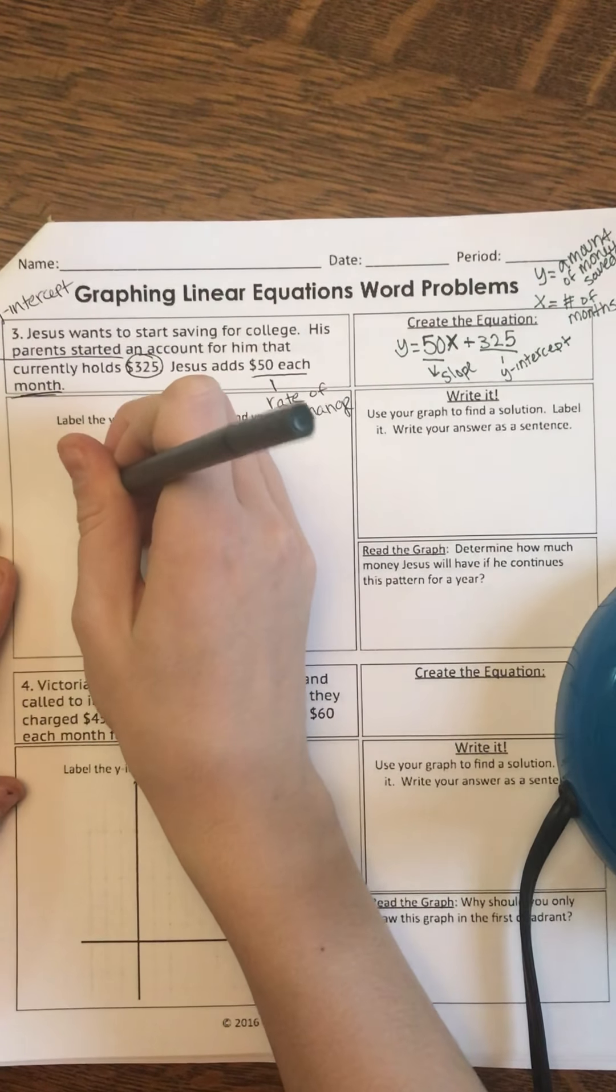Use your graph to find a solution. Label. Write your answer as a sentence. So we graphed it. You don't need to write it. I just wanted you to graph it. Okay. So now let's read the graph. Determine how much money Jesus will have if he continues this pattern for a year.